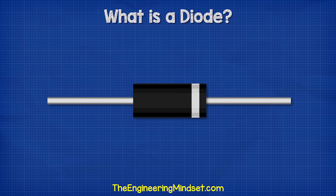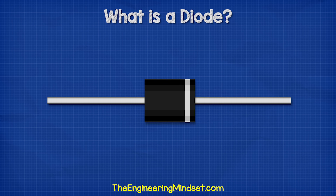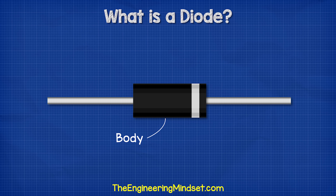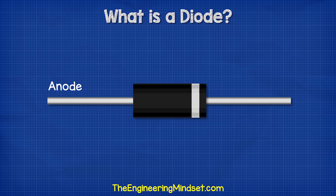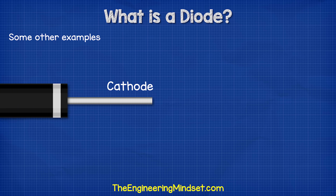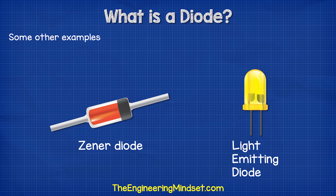A diode looks something like this and it comes in different sizes. They typically have a black cylindrical body that has a stripe at one end, as well as some leads coming out to allow us to connect it into a circuit. This end is known as the anode and this end is the cathode, but we're going to see what that means later on in this video. You can also get other forms such as the Zener diode or an LED, which is a light emitting diode, but we're not going to cover those in this video.